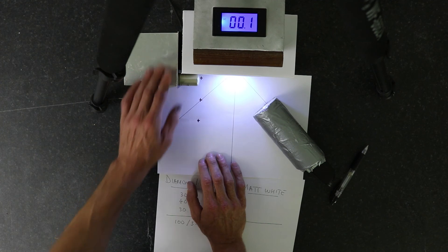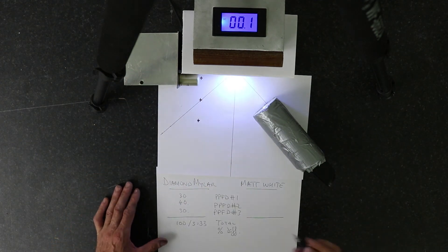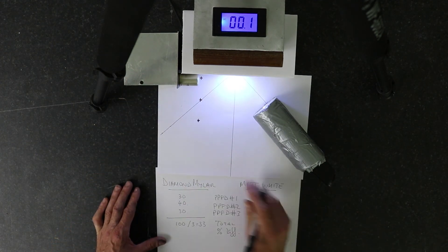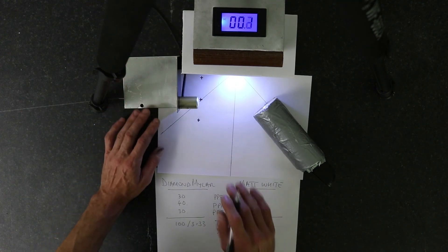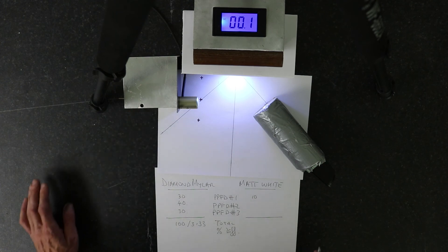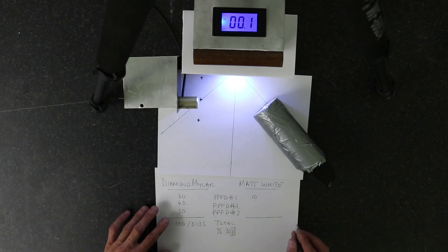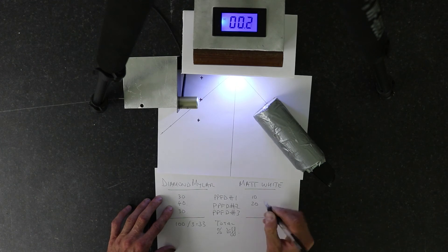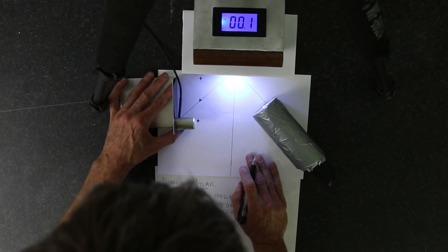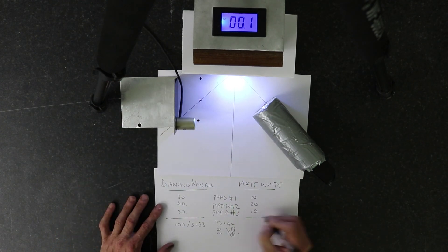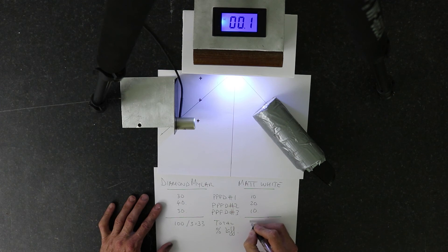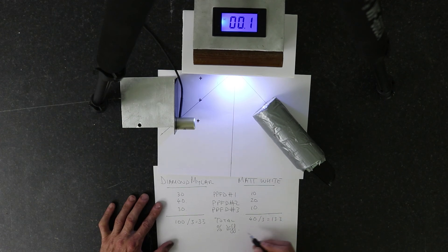So in this case, our first measurement is barely registering, it's 10. Our second measurement is just hitting 20, we'll give it 20. And our third is 10. So not much. Average across the three is 40 divided by three, is 13.3.